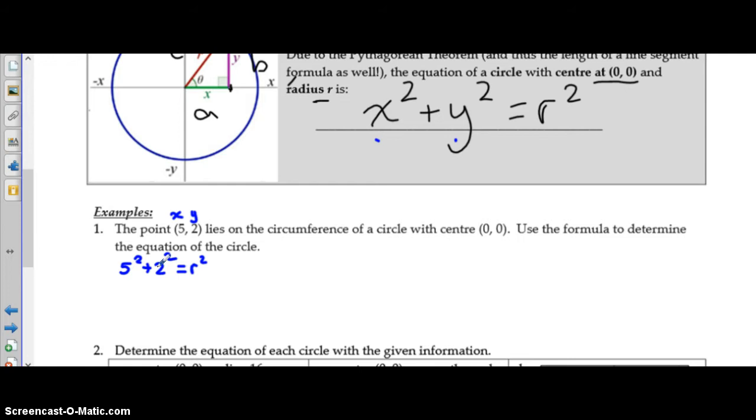So, let's just go ahead and do that calculation. 5 squared is 25, 2 squared is 4, 25 plus 4 is 29, and that gives you the value of r squared. The r squared gets put right there into the equation. So, your equation is x squared plus y squared equals 29.